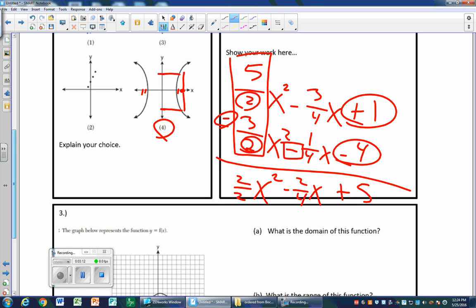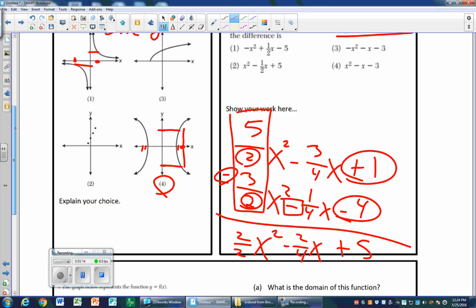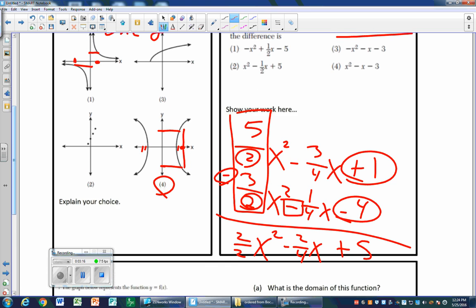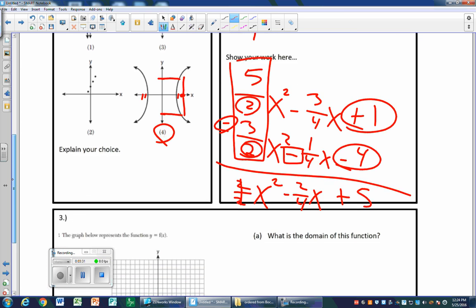And then positive 1 minus negative 4 is positive 5. That doesn't look like one of our choices but it is. So first of all it's positive 5. Now 2/2 is 1, and 2/4 is the same as 1/2. So choice 2 is the correct answer. No work, no credit.